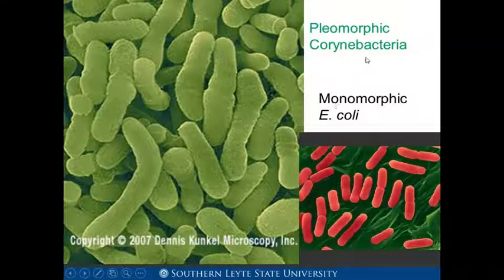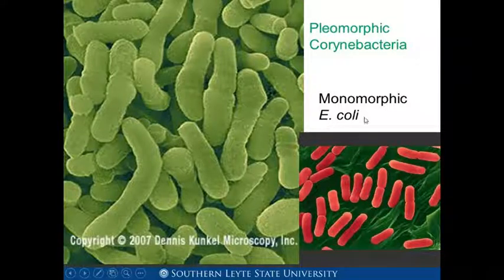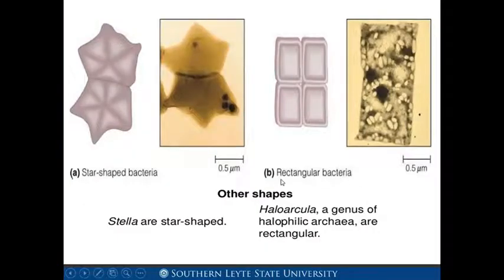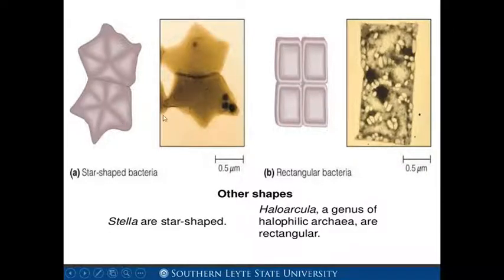Next, we have pleomorphic Corynebacterium, and the monomorphic E. coli. Then we have other shapes: the stella and the haloarcula. The stella are star-shaped. In the haloarcula, a genus of halophilic archaea, the shape is rectangular.